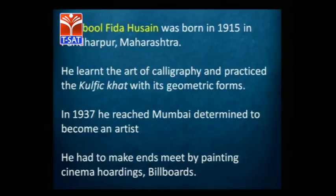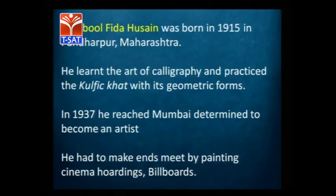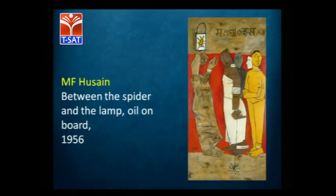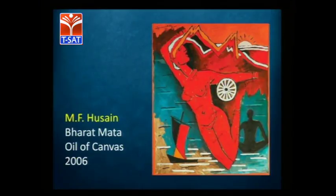M.F. Husain — Maqbool Fida Husain — was born in 1915 in Pandharpur, Maharashtra. He reached Mumbai in 1937 and basically started as a billboard painter — he used to paint cinema posters — then later entered art practice. One example of his work is the famous painting Between the Spider and the Lamp. Another is the controversial painting Bharat Mata, which generated controversy from right-wing forces.